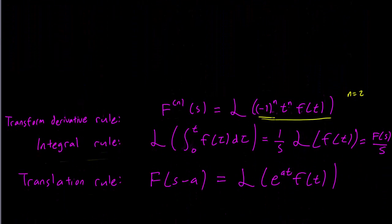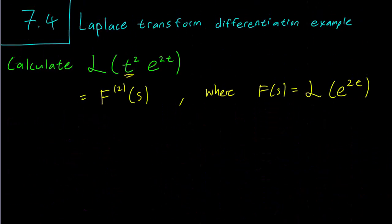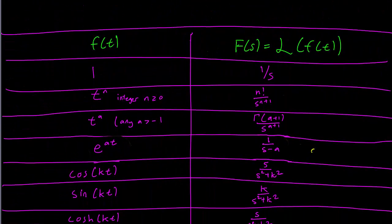So remember that there's a minus 1 term here that we have to worry about, but we don't have to do that in this case because n is equal to 2. So anyway, we need to calculate Laplace transform of the exponential function and we know how to do that. It's in the table. We set a equals 2 here.